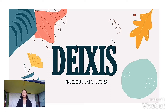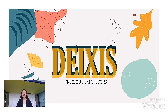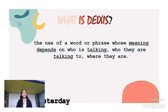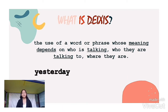According to Cambridge Dictionary, dyxis is the use of a word or phrase whose meaning depends on who is talking, who they are talking to, and where they are. Say for example, yesterday, me, and here.